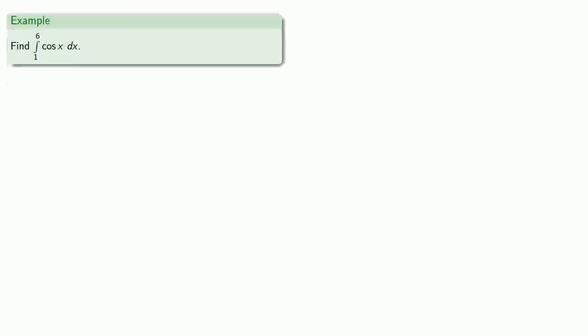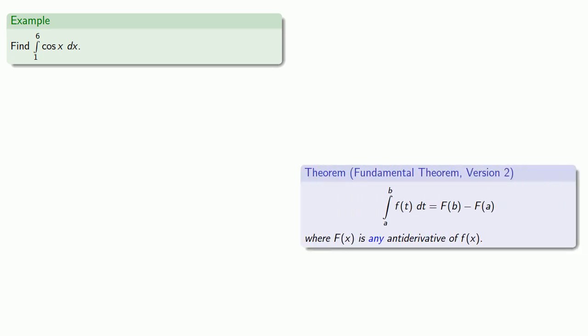So let's evaluate the integral from 1 to 6 of cosine x dx. Our new version of the fundamental theorem says we can find any function whose derivative is cosine of x. So capital F of x is going to be an antiderivative of cosine.